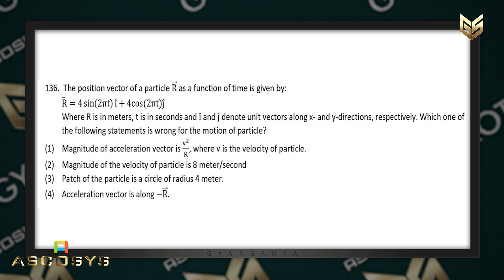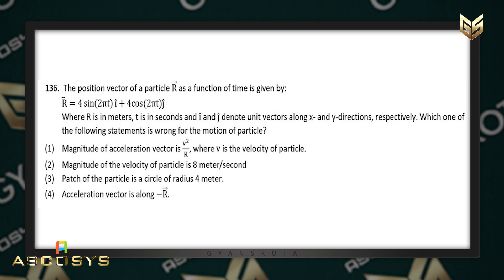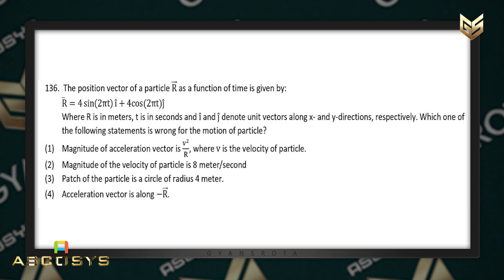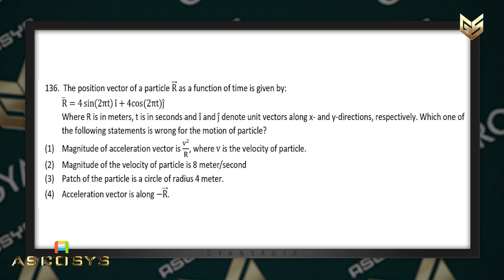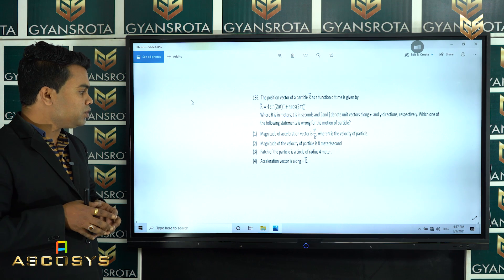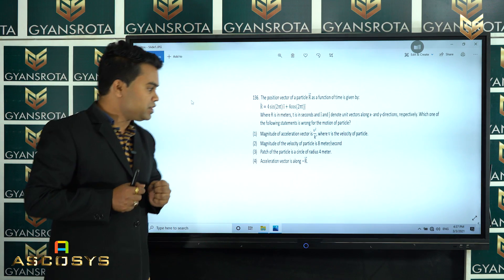Option 1: magnitude of acceleration vector is V²/r — we know this is correct, as V²/R is the magnitude of centripetal acceleration, where V is the velocity of the particle. Option 2: magnitude of the velocity of the particle is 8 m/s — we have to check this one. Option 3: path of the particle is a circle of radius 4 meters — we also have to check this. Option 4: acceleration vector is along minus R, i.e., opposite — we need to check options 2, 3, and 4.